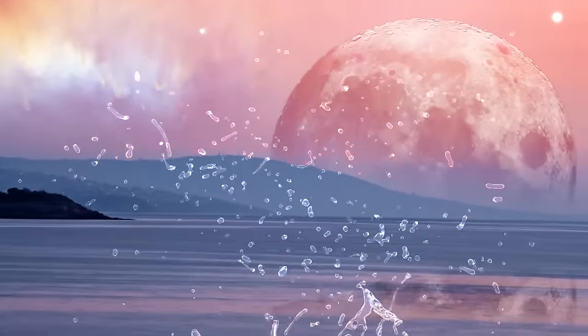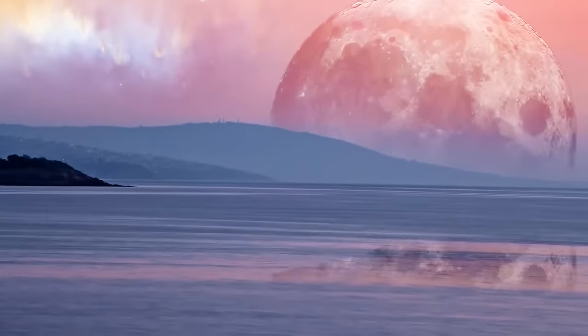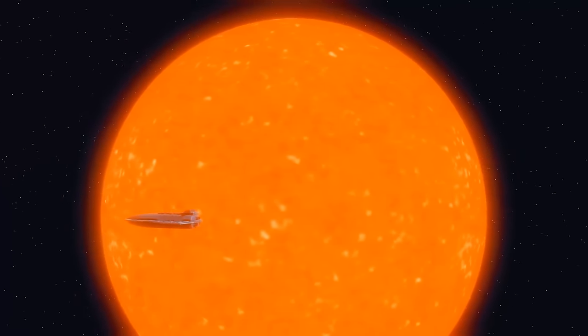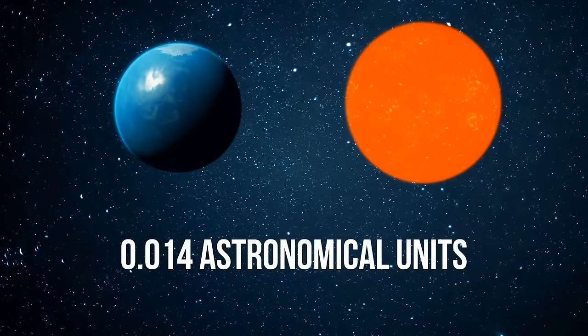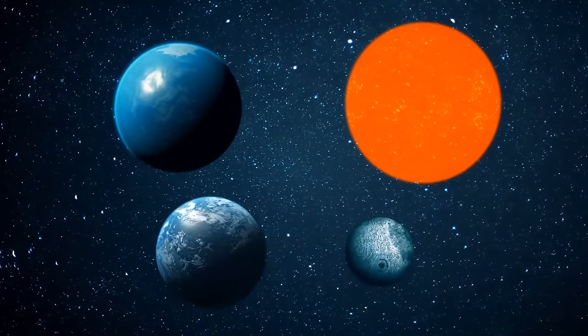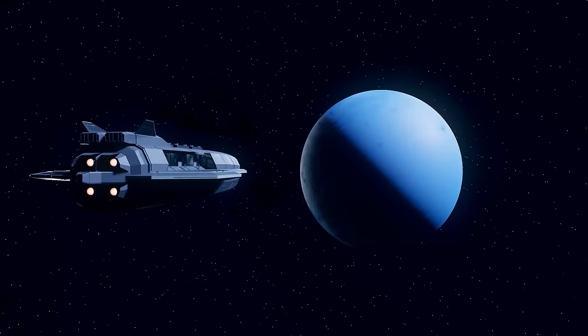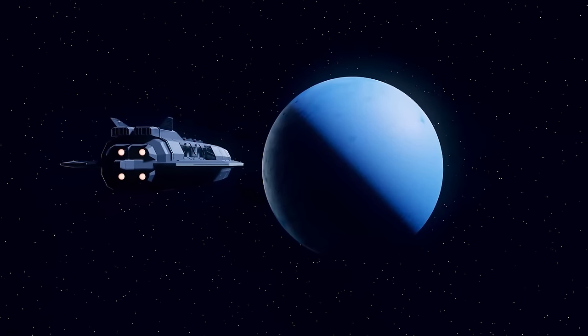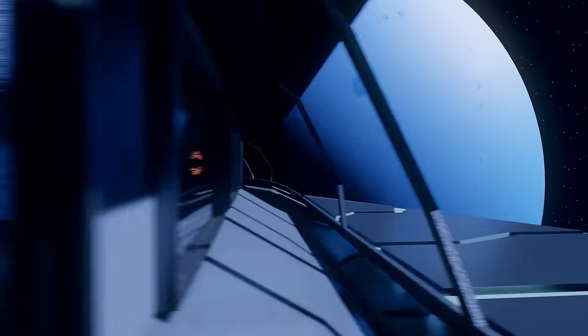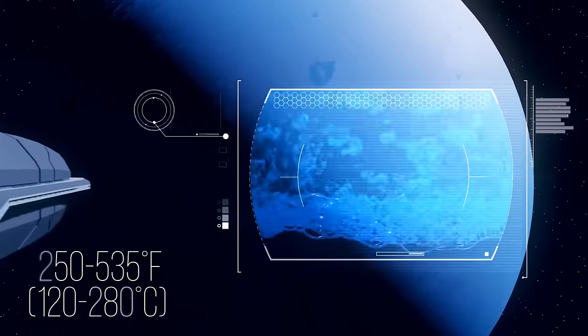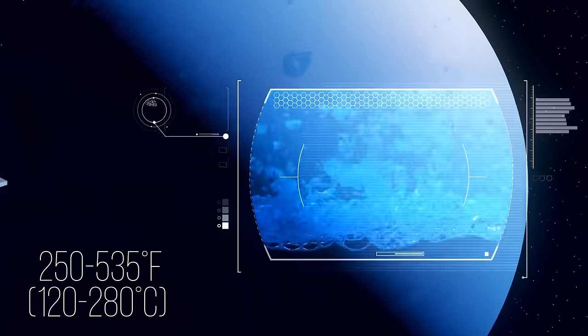But even so, it's probably a water world. Gliese 1214b is very close to its star. It's only 0.014 astronomical units away, which is less than the distance between the Moon and us. The year there lasts about 36 hours. And the temperatures, to put it mildly, are just wild. Scientists suggest that the average temperature there can reach 250 to 535 degrees Fahrenheit. Ooh, that's hot.